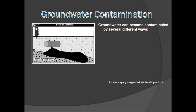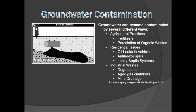Unfortunately, groundwater is susceptible to contamination from a variety of sources. Can you think of some ways that groundwater might become contaminated? Contaminants might be fertilizers or organic waste from agricultural practices, oil or septic system leaks from residential areas, or chemicals and mine drainage from industrial processes.